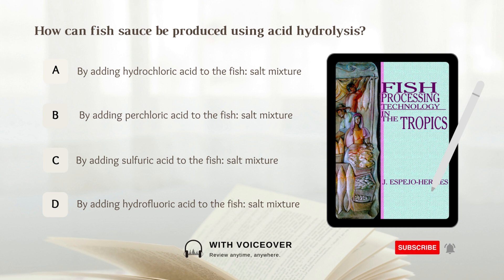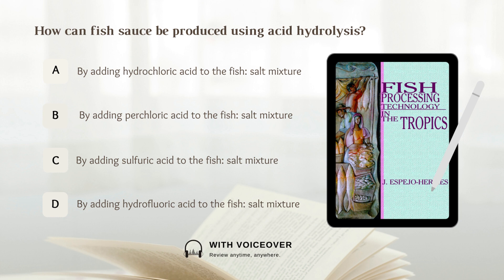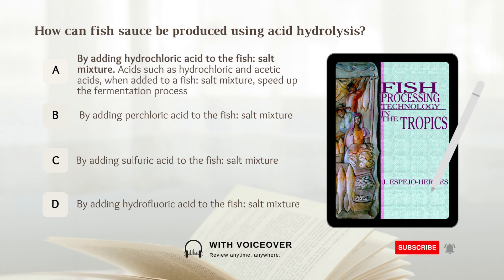How can fish sauce be produced using acid hydrolysis? A. By adding hydrochloric acid to the fish salt mixture. B. By adding perchloric acid to the fish salt mixture. C. By adding sulfuric acid to the fish salt mixture. D. By adding hydrochloric acid to the fish salt mixture. Answer: A. By adding hydrochloric acid to the fish salt mixture. Acids such as hydrochloric acid and acetic acids, when added to a fish salt mixture, speed up the fermentation process.